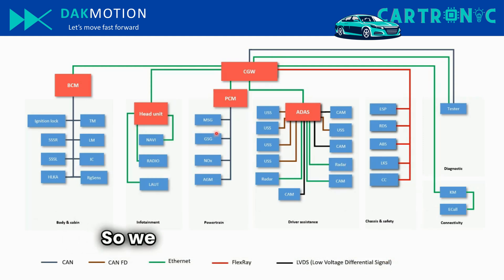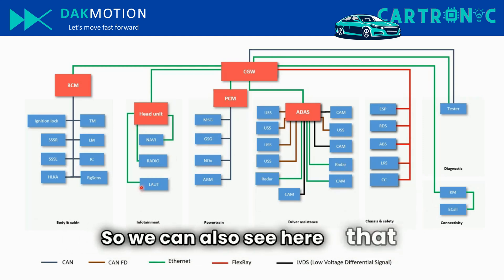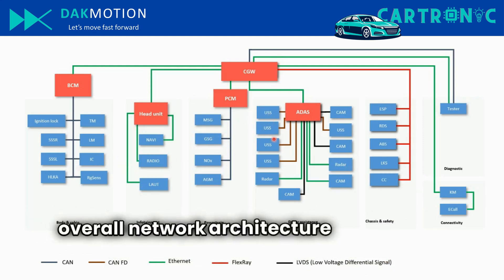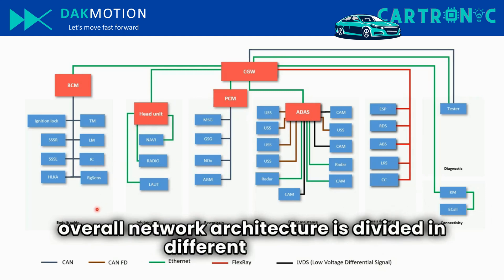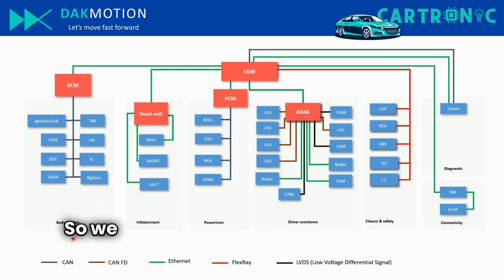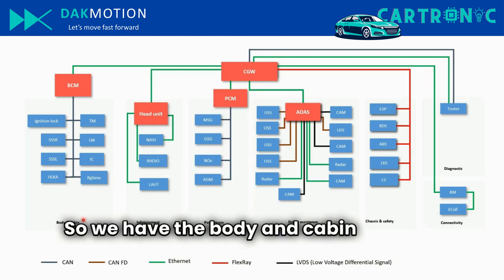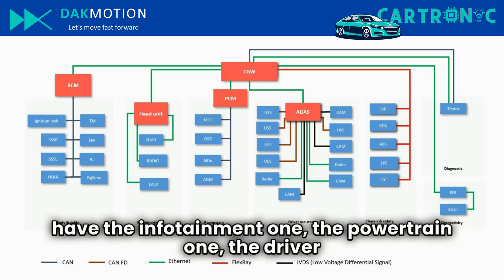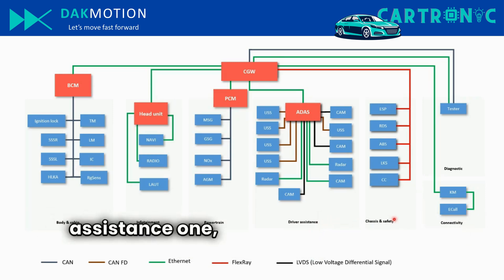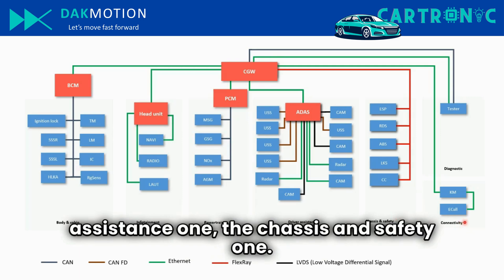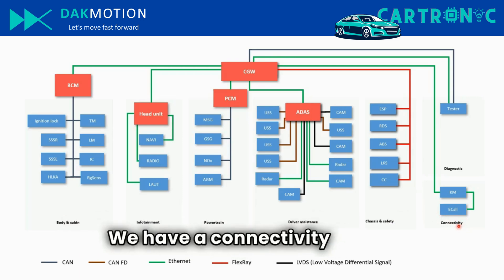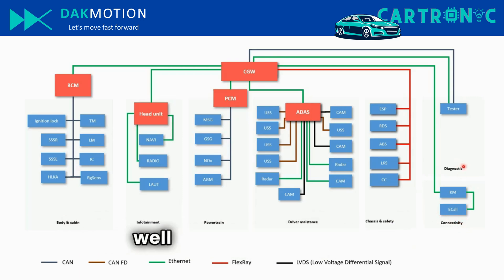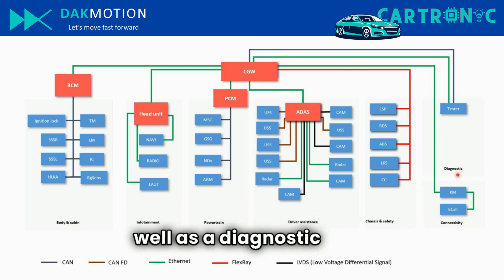The overall network architecture is divided into different domains: a body and cabin domain, an infotainment domain, a powertrain domain, a driver assistance domain, a chassis and safety domain, a connectivity domain, as well as a diagnostic part.